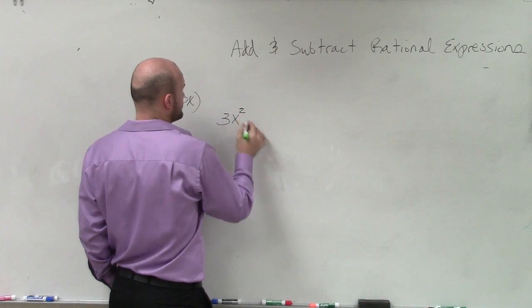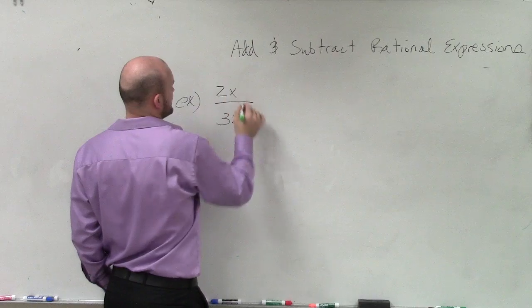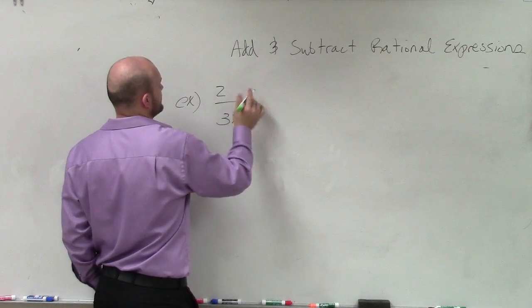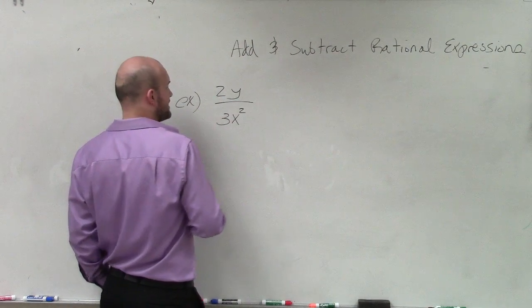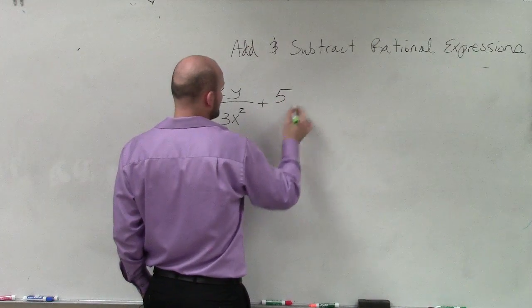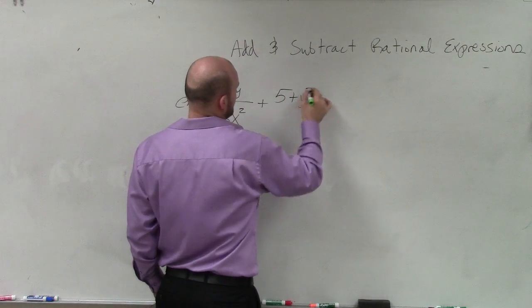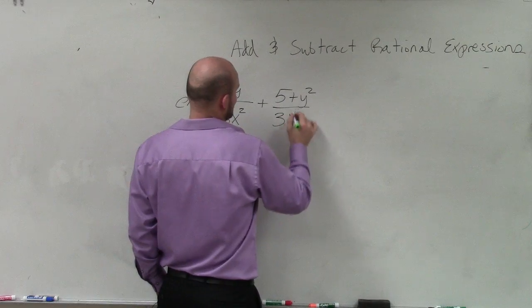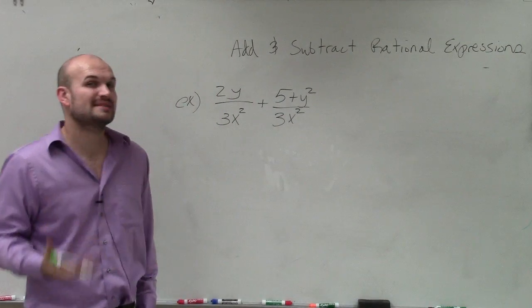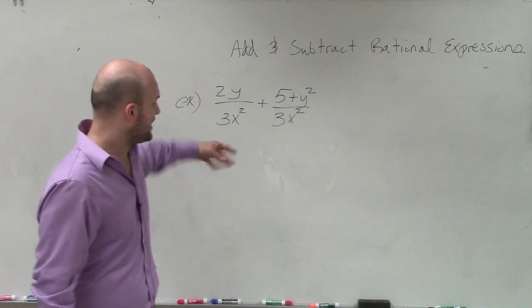Let's say I have 3x² over, let's say 2x, or let's do this. Let's do 2y divided by 3x² plus 5 plus y² divided by 3x². Now, since these have the same denominator, I can combine them.